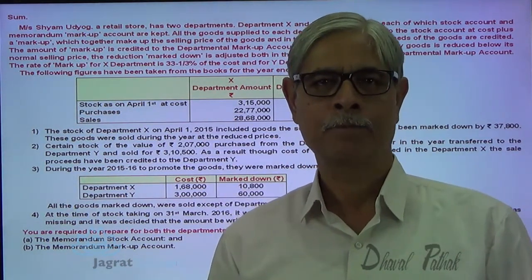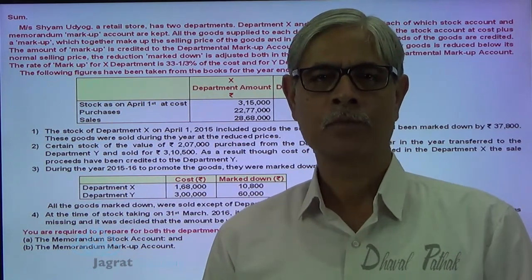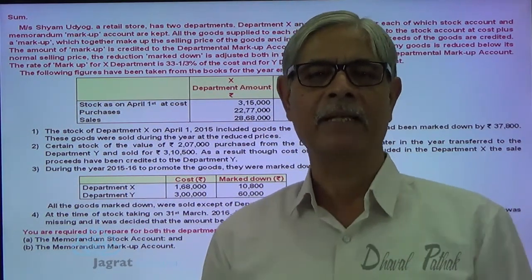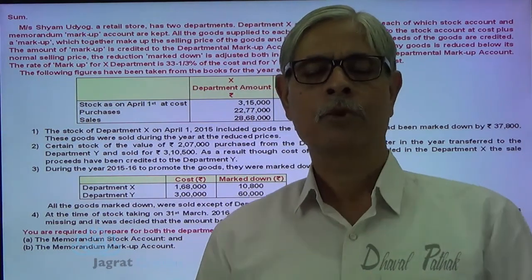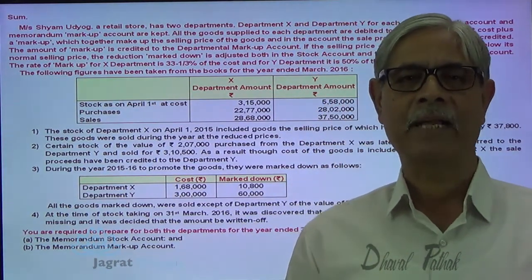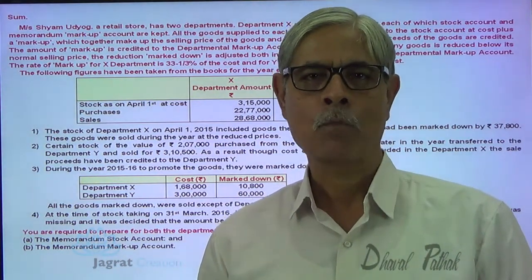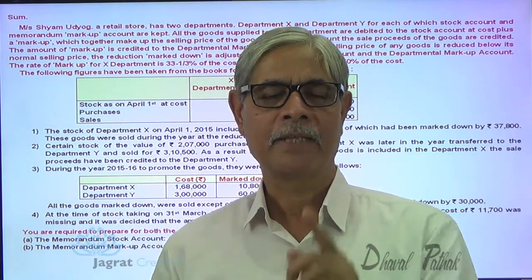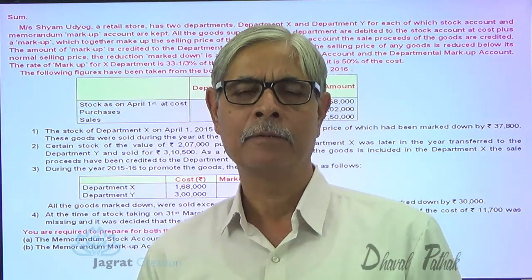If goods are sold at selling price, the stock account is credited. The unsold closing stock will have a closing balance in the stock account, and the corresponding unrealized profit element is recorded on the debit side of the memorandum markup account as a closing stock reserve. For markdown, the entry is: markup account debit, stock account credit. If there is an unsold markdown item at the end of the period, it must be considered when valuing the closing stock.